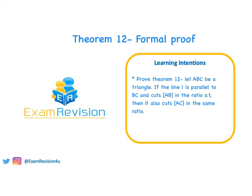Hi guys, in today's video we're going to be looking at the formal proof of Theorem 12. Theorem 12 states: let ABC be a triangle. If the line L is parallel to BC and cuts AB in the ratio S to T, then it also cuts AC in the same ratio.